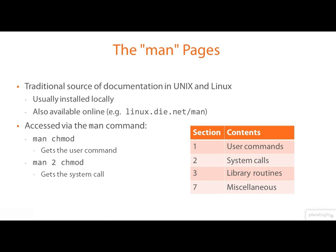Most of the time you don't care what section number something is in, but sometimes you do, because by default man will find a matching page from the lower-numbered section. So 'man chmod' is going to get me the manual page for the chmod user command. That command is essentially just a wrapper around the chmod system call, but if I want to get the man page for that, I need to explicitly specify the section number with 'man 2 chmod'.